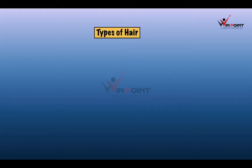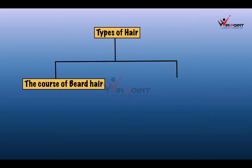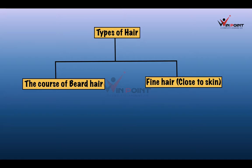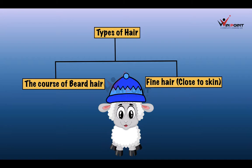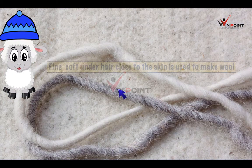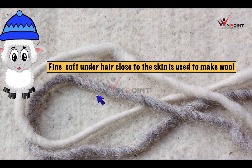There are two types of hair when taking hair from an animal. One is the coarse beard hair, and the second is fine hair close to the skin. We use the fine soft under hair close to the skin, which is used to make wool.